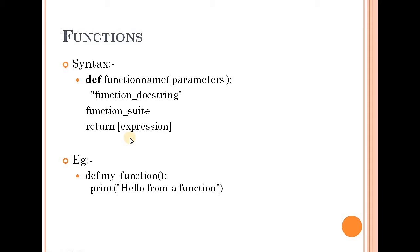For a simple example: def myfunction — that is the function name. Inside the function you can print hello from a function. Once you define the function, you then need to call it.